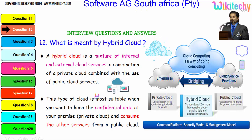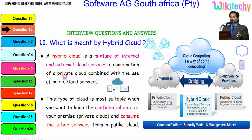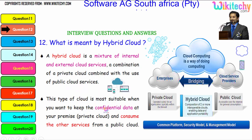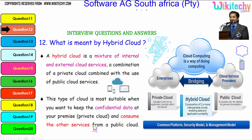By definition, a hybrid cloud is a mixture of internal and external cloud services — a combination of a private cloud combined with the use of public cloud services. This type of cloud is most suitable when you want to keep confidential data at your own premises and consume other services from a public cloud.